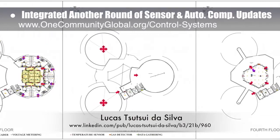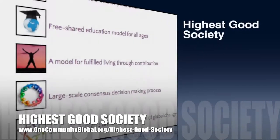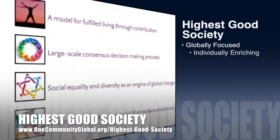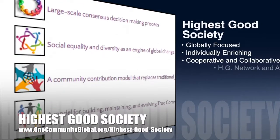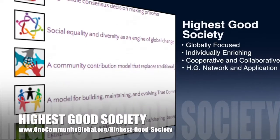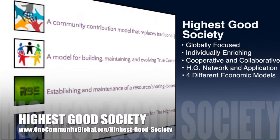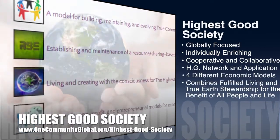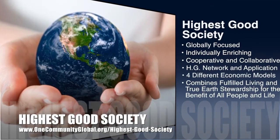One Community's approach to highest good society is globally focused, individually enriching, cooperative and collaborative. It includes a highest good network and application, four different economic models, and combines fulfilled living and true earth stewardship for the benefit of all people and all life on this planet.